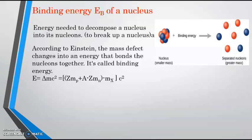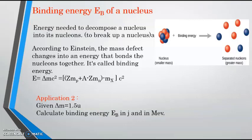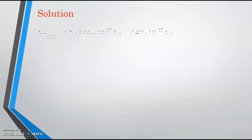In this application, we are going to work with units. In application 2, we are given delta M equal 1.5U. Calculate the binding energy EB in Joule and in mega electron volt. When we're going to get energy in Joule, delta M, we're going to work with kg. To convert from U to kg, given 1U equals 1.66 times 10 to the power minus 27 kg, we're going to find delta M in kg: 2.49 times 10 to the power minus 27 kg.